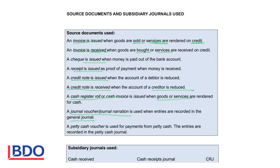Petty cash vouchers are used for payments out of the petty cash — that's the tin where you keep money for small amounts — and those payments will be recorded in the petty cash journal.